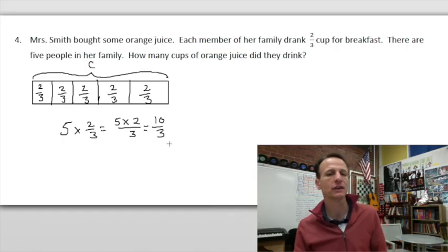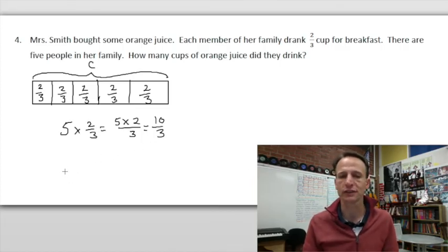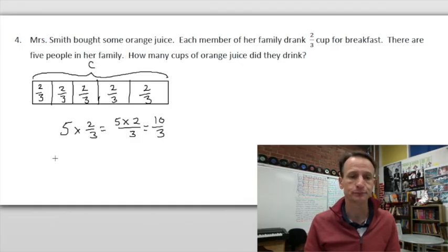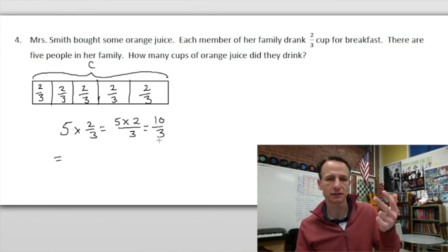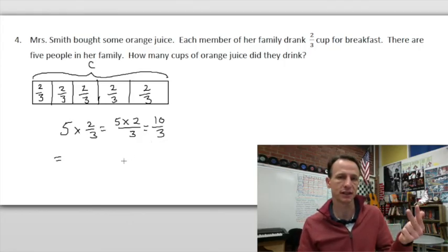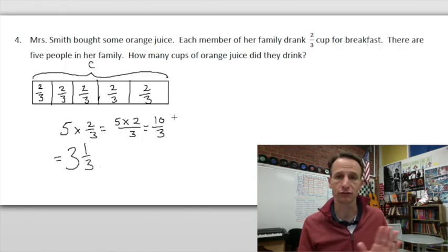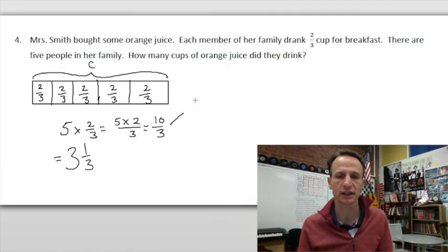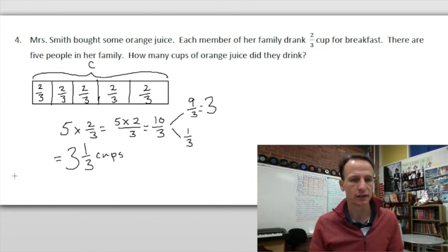Now the question is, how many cups of orange juice did they drink? 10 thirds isn't really a good answer, so we do want to convert that over to a mixed number. I like to do this in my head. Three, six, nine, okay, so there are three thirds in ten thirds, and so that's three, and that leaves one third. If you're confused by what I just did, I said hey, there's nine thirds and one third in decomposing the ten thirds. Nine thirds is equal to three wholes. So they drank three and one third cups.